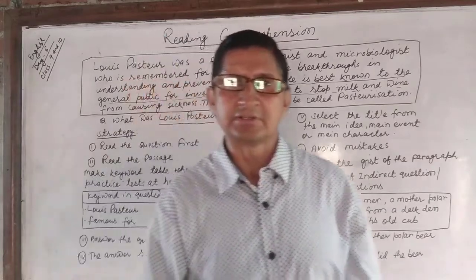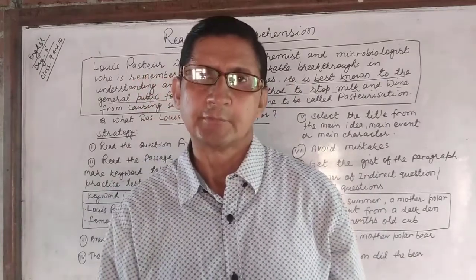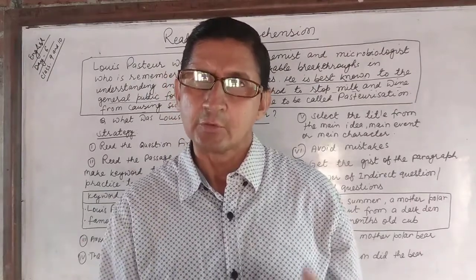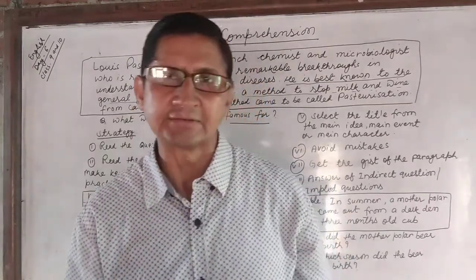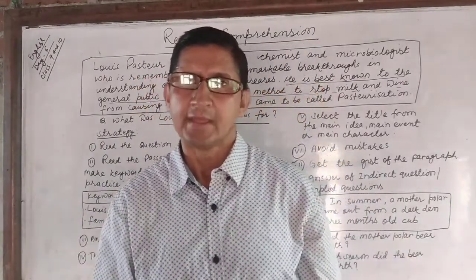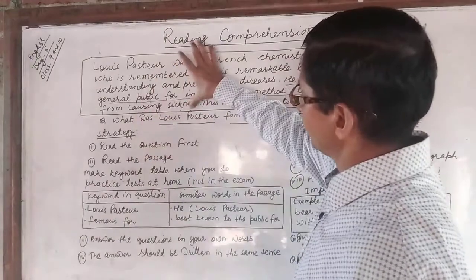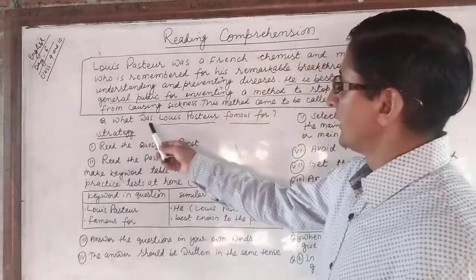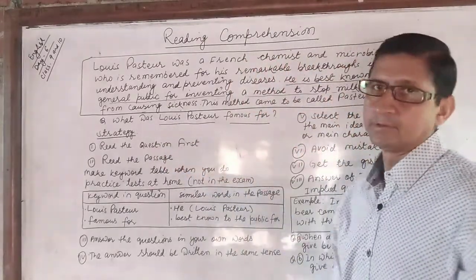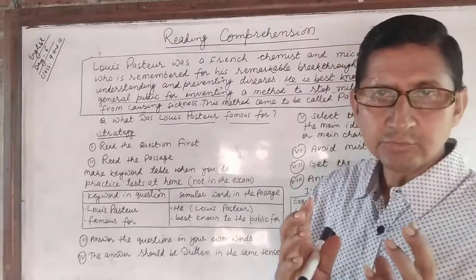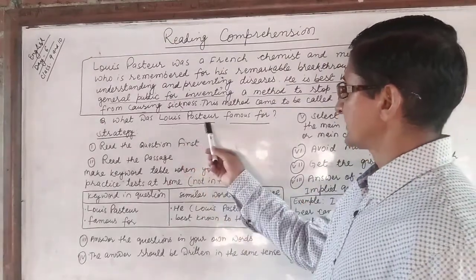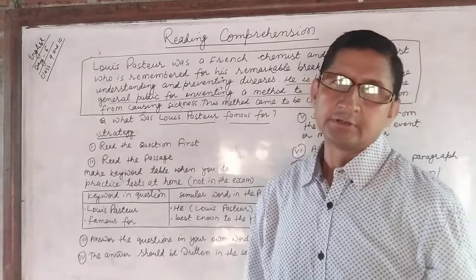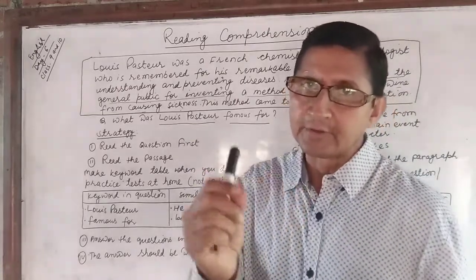Underline the keywords in the questions. When you read the question, underline the keywords. There are keywords in the question, and with the help of those keywords you have to find out the answer in the passage. For example, the question is: 'What was Louis Pasteur famous for?' In this question there are two keywords: 'Louis Pasteur' is one keyword, and 'famous for' is another keyword. In this way you have to underline the keywords when you read the questions.